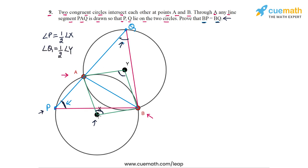So if we are able to show that the angles at X and Y are equal, it will follow that angle P and angle Q are also equal, and from there it will follow that BP equals BQ. To prove that the angles at X and Y are equal, we will consider the two triangles XAB and YAB. Observe this carefully — triangle XAB and triangle YAB.